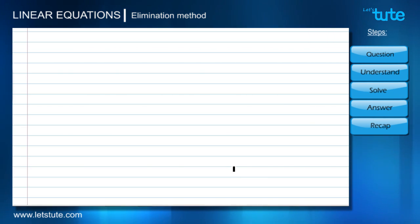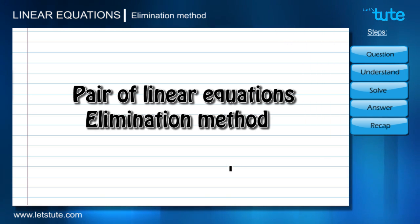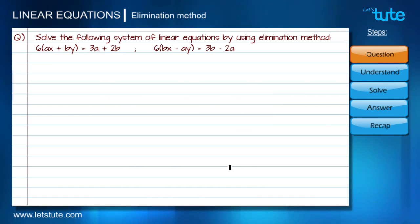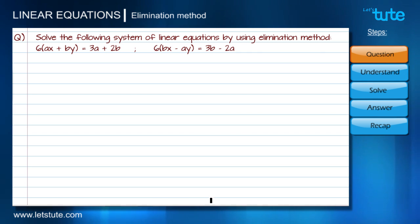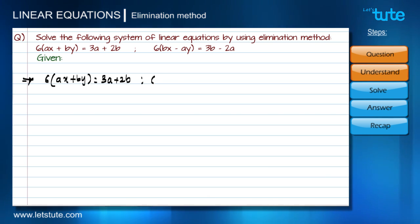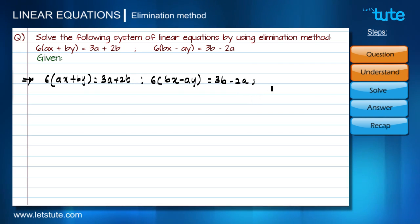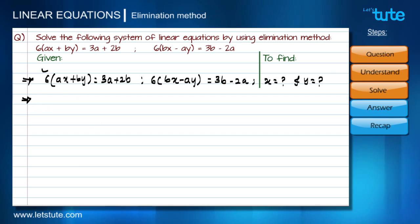Hello everyone, welcome to the problem solving session on pair of linear equations. In this session we are going to solve a problem based on the elimination method. The question says: solve the following system of linear equations — six into (ax + by) equals 3a + 2b, and six into (bx − ay) equals 3b − 2a. We are given two equations and we have to find the value of x and y.